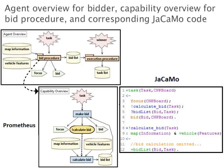This image shows a snippet of the agent overview diagram for bidder agents, focusing on the bid procedure capability and its corresponding capability overview diagram. The bid procedure is responsible for analyzing the context and calculating a bid for a task. It receives as input the percept of a task and data about the map and vehicles, and produces as output the bid action, storing its value as a belief. The focus action happens on a contract-net board artifact, which receives the bid action. Vehicle features include speed, load capacity, battery, tools, and so on. This image also shows code in JaCaMo corresponding to the diagrams in Prometheus. Plans in PDT are directly converted to plans in Jason with their corresponding triggering events and plan bodies composed of actions, goals, and data manipulation.